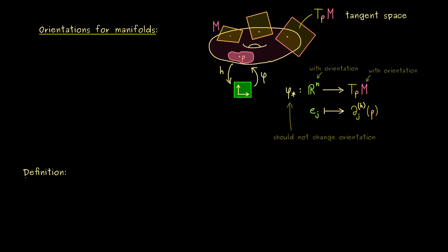In particular, now we will define the notion orientable manifold. So a smooth manifold M is called orientable if there is a family of orientations for all the corresponding tangent spaces. So we could just write it as a set of the pairs.